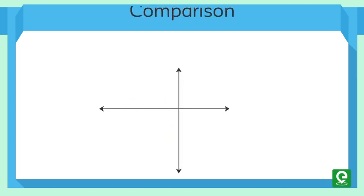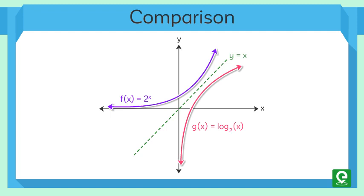We can compare the two graphs based on the following points. Number one, intercepts: the Y-intercept of f(X) at (0,1) is the reflection of the X-intercept of g(X) at (1,0).